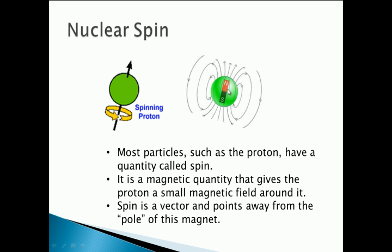The shape of the magnetic field is as though there was a tiny bar magnet inside the proton, so you have a north pole at one end and a south pole at the other. The field lines point away from the north pole and curve around just like a bar magnet, pointing towards the south pole. Spin is actually a vector, and the direction of the vector points away from the north pole along the axis of spin.